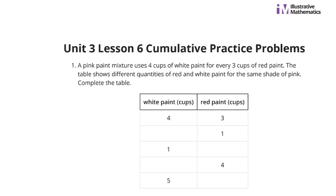In question 1, a pink paint mixture uses 4 cups of white paint for every 3 cups of red paint. The table shows different quantities of red and white paint for the same shade of pink. Complete the table.